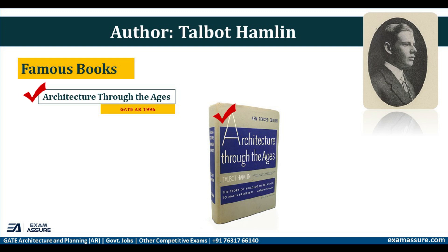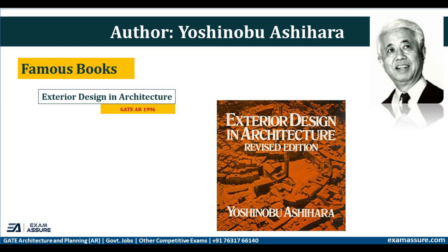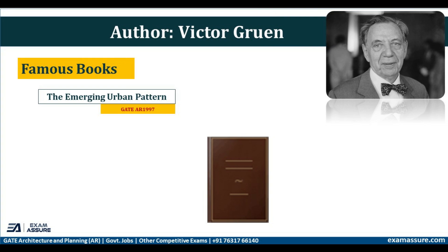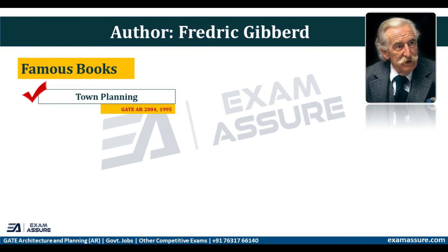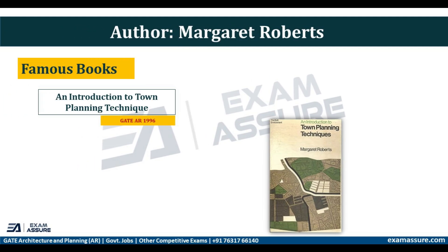Next, Talbot Hamlin — one of his famous books is Architecture Through the Ages. Next, Yoshinobu Ashihara — one of his famous books is Exterior Design in Architecture. Next, Victor Gruen — one of his famous books is The Emerging Urban Pattern.